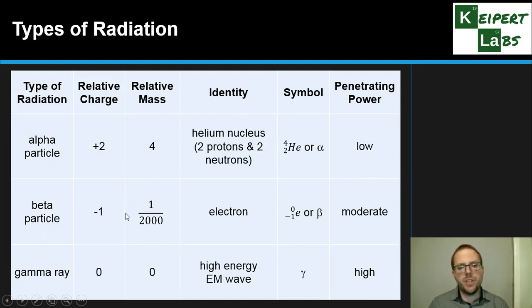We have a beta particle which is essentially an electron that originates from the nucleus, so it has the same relative mass of an electron and a single negative charge with a moderate penetrating power.